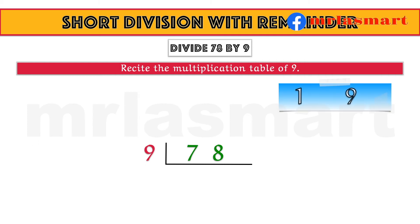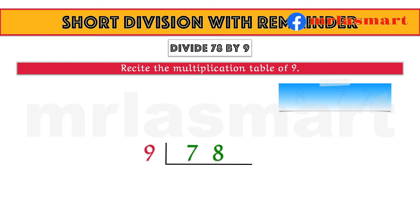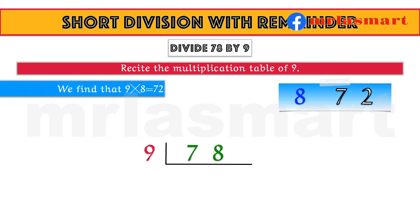9 1s are 9, 9 2s are 18, 9 3s are 27, 9 4s are 36, 9 5s are 45, 9 6s are 54, 9 7s are 63, 9 8s are 72. We find that 9 8s are 72.